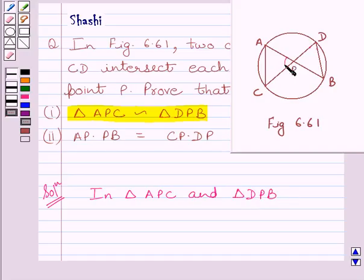Angle APC is equal to angle DPB. These two angles are vertically opposite angles, so they are equal. So we can write angle APC equals angle DPB.